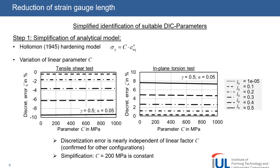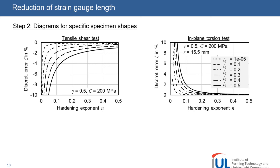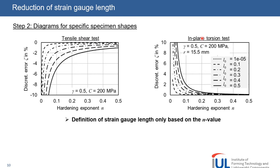In the second step, we investigated the influence of the hardening exponent N on the discretization error. As you see in these two diagrams, the hardening has a major influence on the estimated error. The weaker the hardening, the exponentially higher the discretization error. With smaller strain gauge lengths, the discretization error decreases. These are specimen-specific diagrams for the tensile shear test or the in-plane torsion tests, which only depend on the N value of the material, which is principally known from the tensile test.